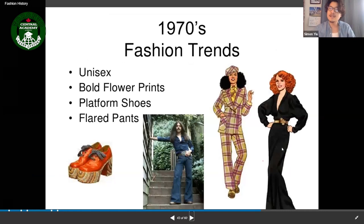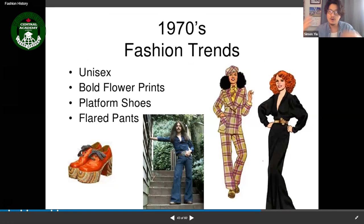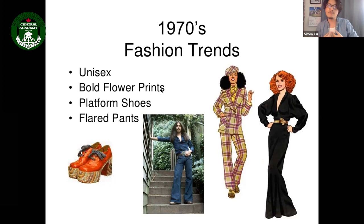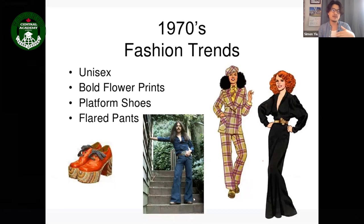In the 1970s, clothing became more unisex — men dressed in more feminine styles, with long hair, tight clothing, flared pants, and flower patterns. From the civil rights movement of the 1960s came more African-inspired flower prints. Platform shoes — with very thick soles — also became popular, along with bell-bottom pants.